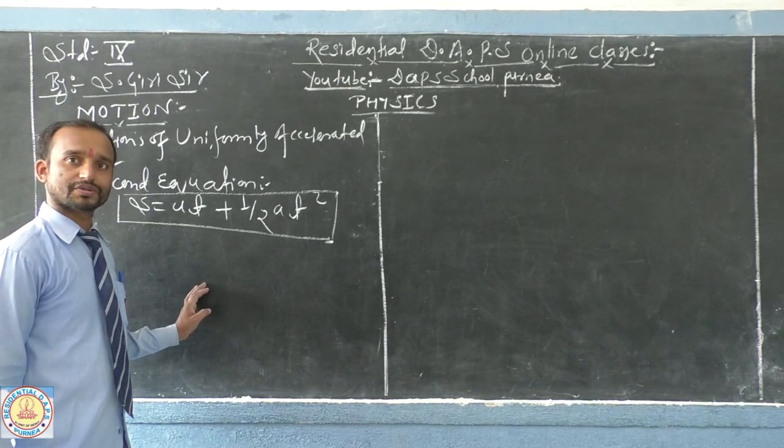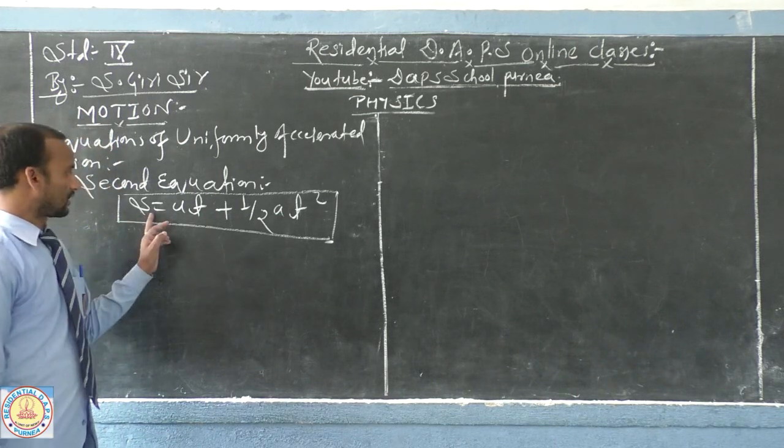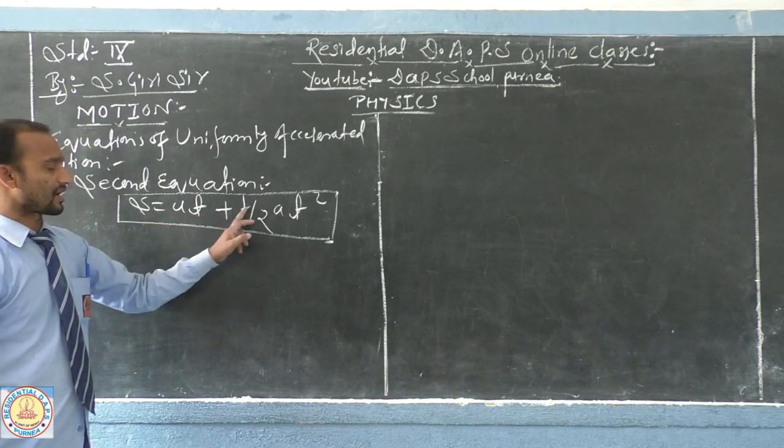Now, dear friends, next equation is S equal to u t plus half a t square.